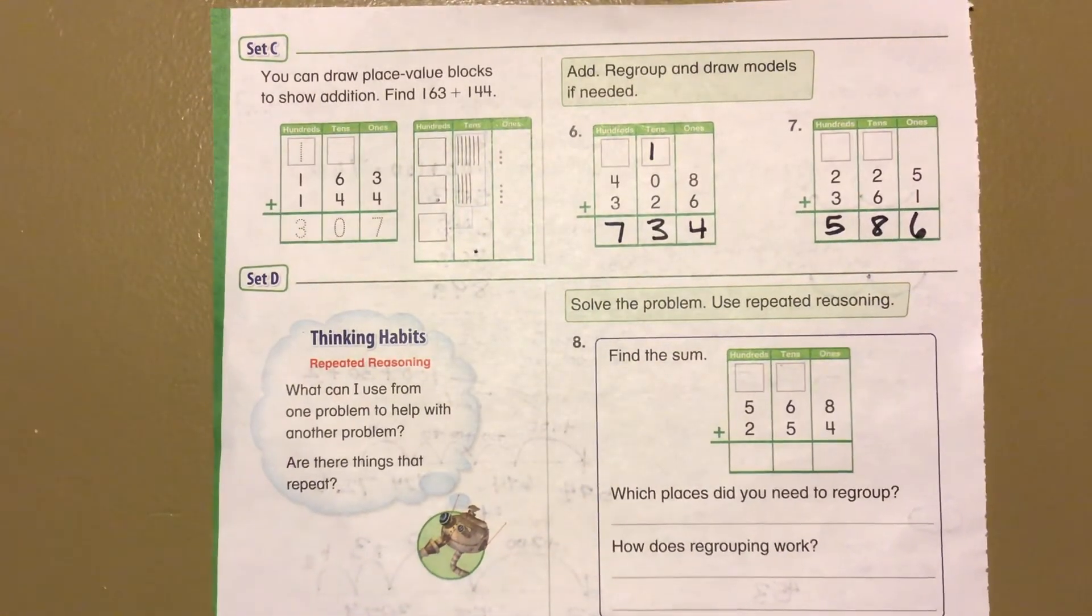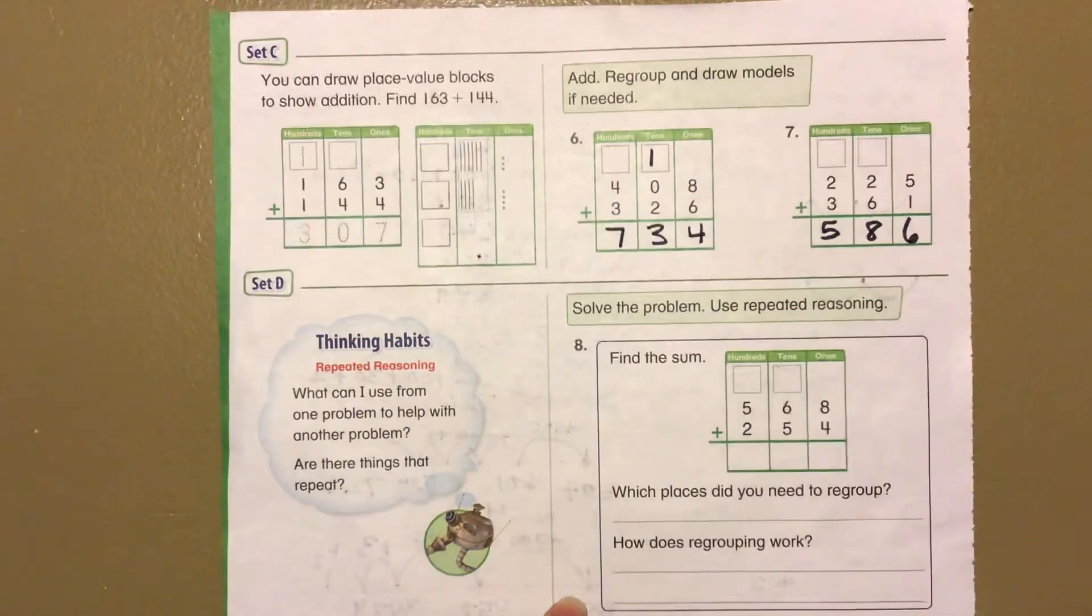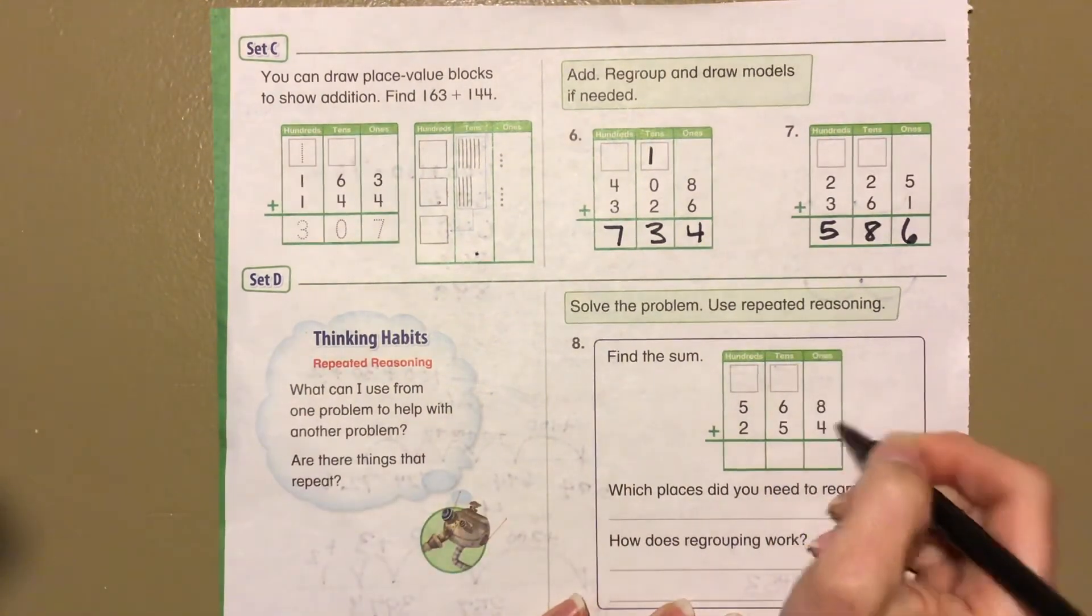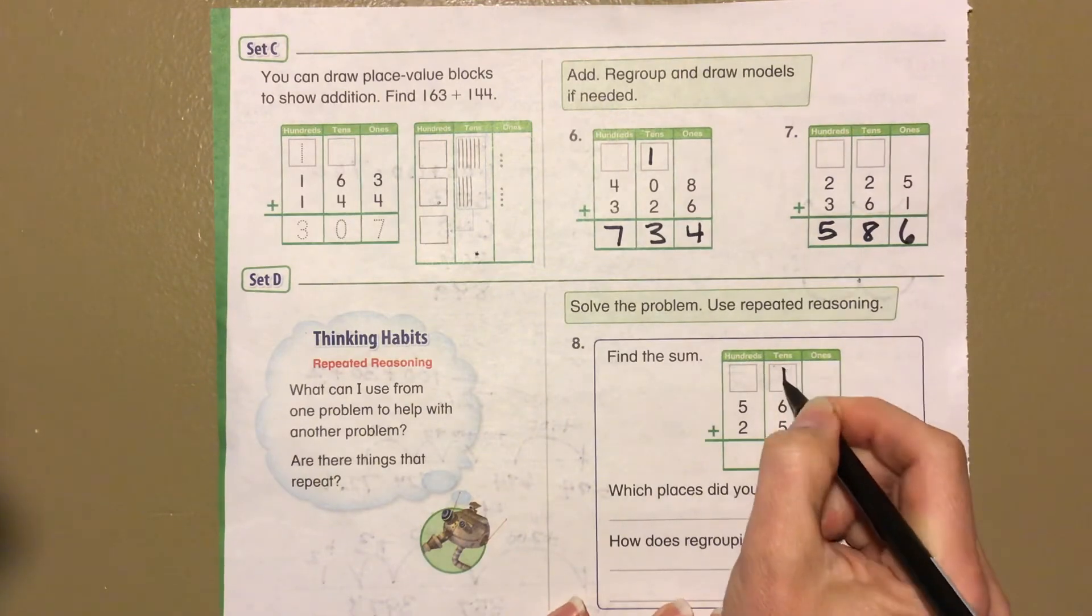All right, number 8. Solve the problem, use repeated reasoning. Okay, so repeated reasoning is just taking a look at what needs to be regrouped. 8 plus 4 is 12, we have to regroup that one.